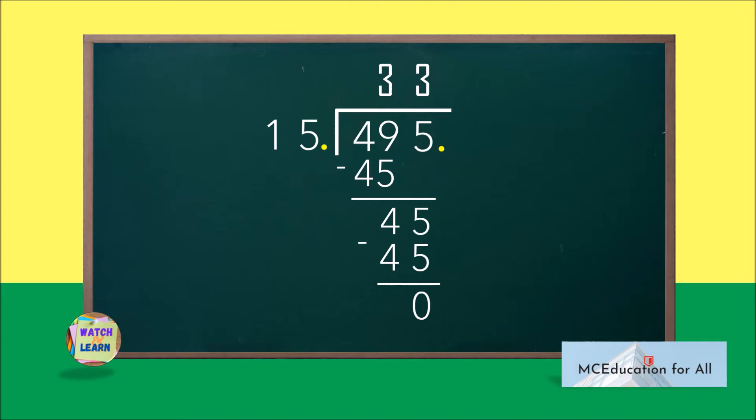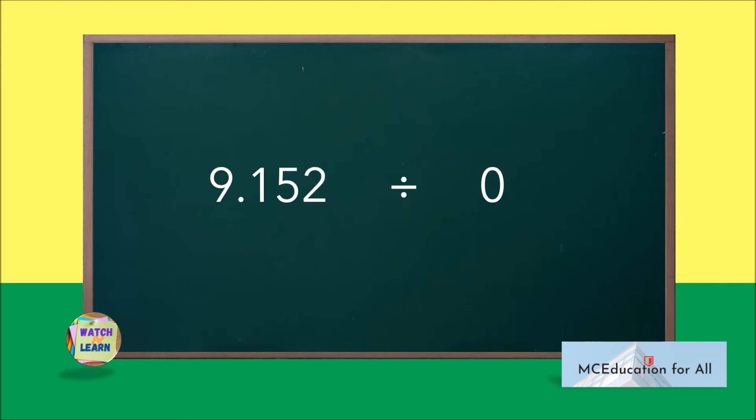Still in dividing decimal by another decimal: 9.152 divided by 0.8. Turn 0.8 into a whole number 8 by moving the decimal point 1 place to the right. At the same time, move the decimal point in 9.152 one place to the right. Now start dividing.